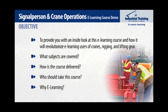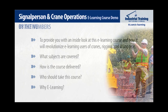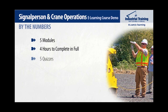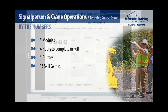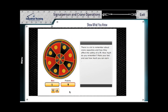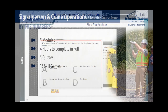To kick this off, let's take a quick look at this course by the numbers. The Signal Person and Crane Operations course is made up of five modules and the course lasts approximately four hours. However, students can revisit all slides, quizzes, and games at any time. There is a practice quiz at the end of each module and over a dozen games to build our students' skills.